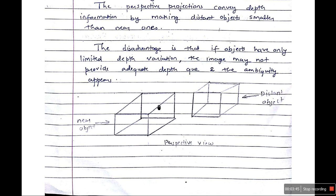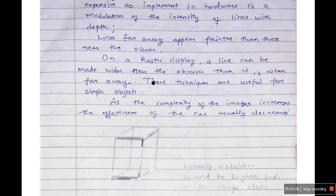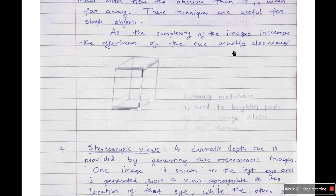Now let's take a look at the third technique: intensity cues. One depth cue that is not expensive to implement in hardware is modulation of the intensity of lines with the depth. What this means is you change the intensity of the lines of the object or image. Lines far away appear fainter than that of the near of the viewer. On a raster display, a line can be made wider near the observer and then when it is far away, you can make it thinner. These techniques are useful for simple objects. As the complexity of image increases, the effectiveness from the cue usually decreases. This is only applicable where the images are simple.